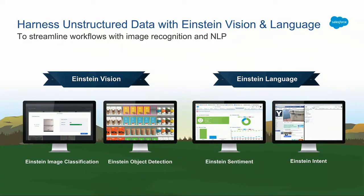Our answer for how you can analyze and automate your unstructured data boils down to two buckets: vision and language. Within vision and language, from a product perspective, there's image classification, object detection, sentiment, and intent. Basically, if I see pictures or I'm reading text, how can I automatically know what's going on within each, analyze it accordingly, and allow you to automate other things within your business process as well.